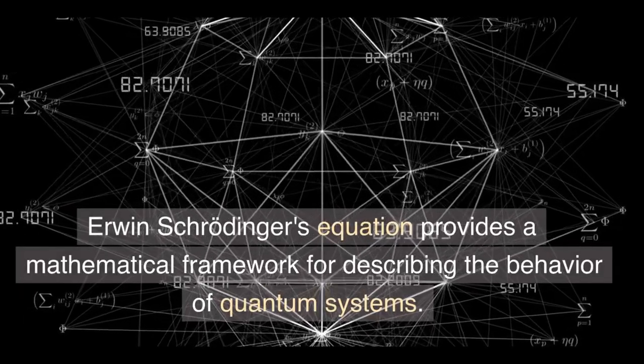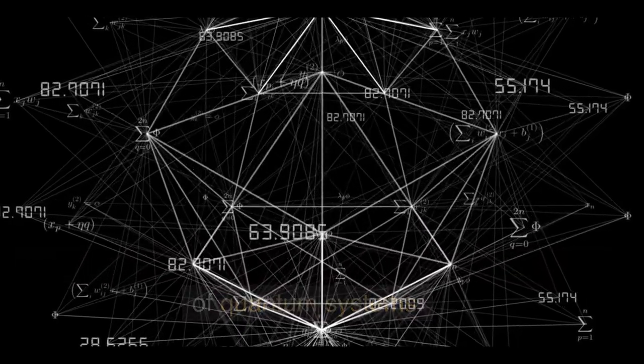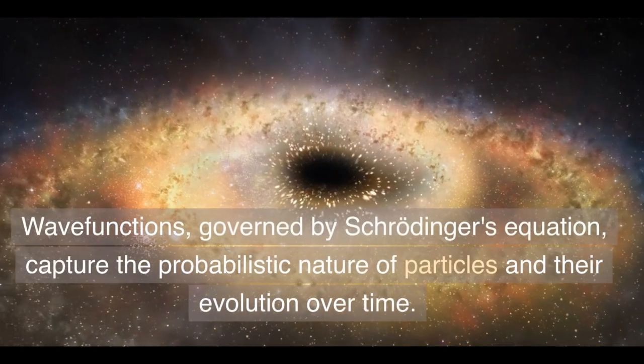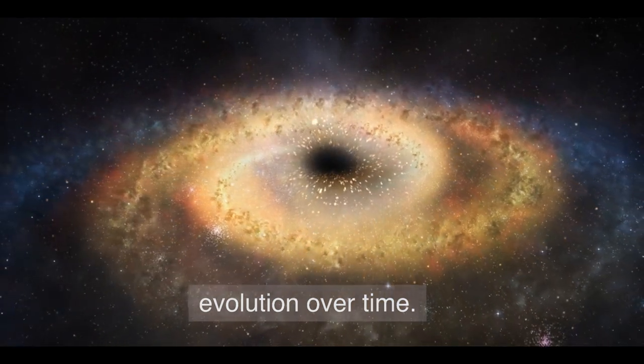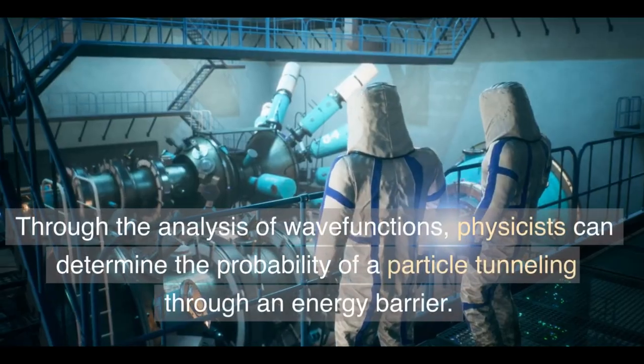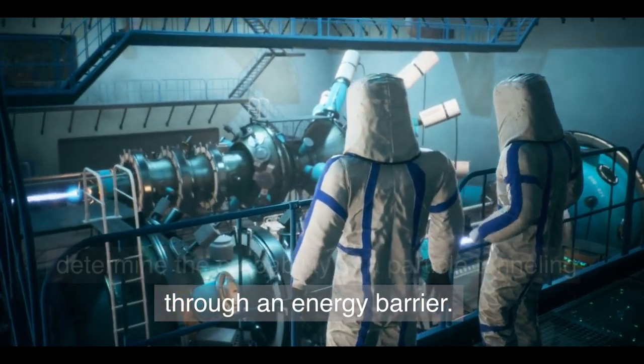Erwin Schrödinger's equation provides a mathematical framework for describing the behavior of quantum systems. Wave functions, governed by Schrödinger's equation, capture the probabilistic nature of particles and their evolution over time. Through the analysis of wave functions, physicists can determine the probability of a particle tunneling through an energy barrier.